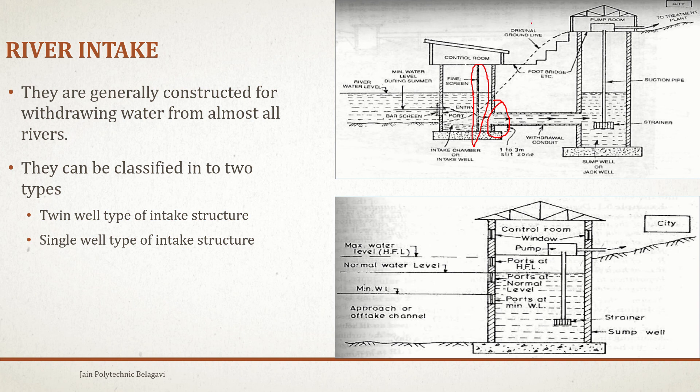This is about the twin well type intake structure. For the single well type of intake structure, there are three inlet pipes: the first at high flood level, the second at normal water level, and the third at minimum water level. Below the minimum water level, no water is available as it drains off.